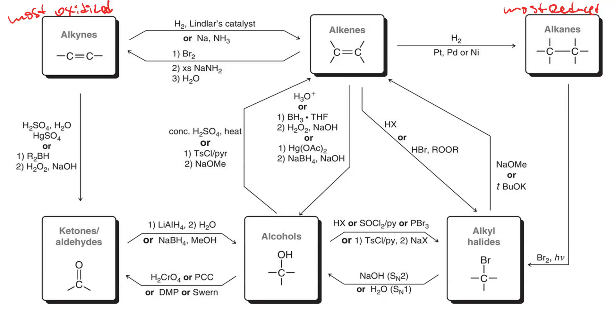Alkenes have the most reactions associated with them, but we can do a lot with alkynes by the same token. An alkane to an alkyl halide requires radical halogenation.